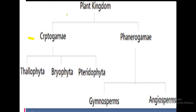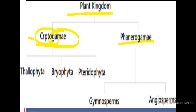Kingdom Plantae is broadly classified into cryptogams and phanerogams. The term 'crypto' means hidden and 'gamy' comes from gametes — the reproductive cells. When gametes are hidden in the plant, such plants belong to cryptogams. When gametes are not hidden, such plants are known as phanerogams.